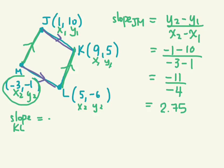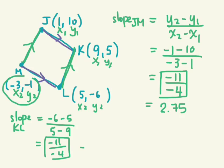Y2, which is negative 6 minus Y1, which is 5. X2 is 5 minus X1, which is 9. Negative 6 take away 5 is negative 11. 5 minus 9, negative 4. Well, we know that negative 11 over negative 4 is positive 2.75.